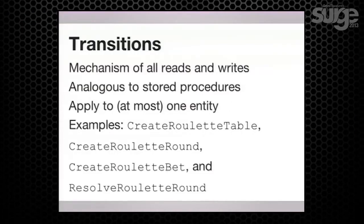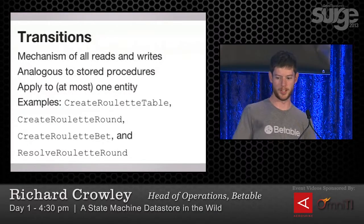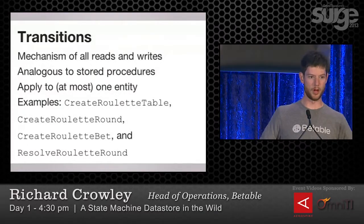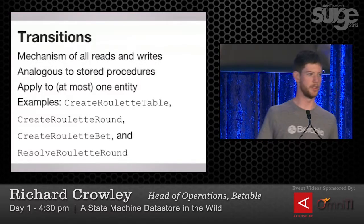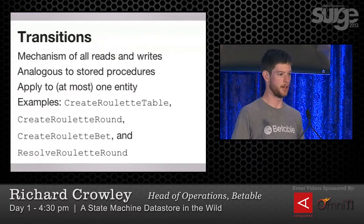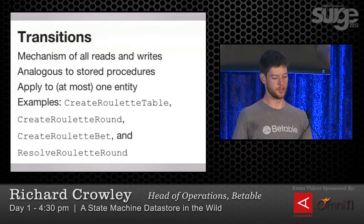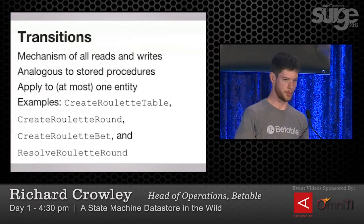The other big thing in this system — and this is where I think we're unique and deviate pretty substantially from systems you'd be familiar with — is the notion of transitions. This is the mechanism for all reads and writes of any sort in this system. There's no SQL or Thrift API or whatever else. To do anything, you make a state transition. This is analogous to a stored procedure in a relational database. A transition applies to a particular entity and acts on that entity.